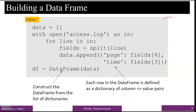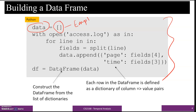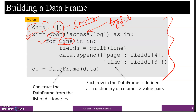This Python programming code creates a data frame. Here we create a data frame from a list of dictionaries — this list called 'data' is empty in the beginning. In the second line we have used the open function to open this log file for reading purposes, and we are using a loop to read the entries of the log file line by line.